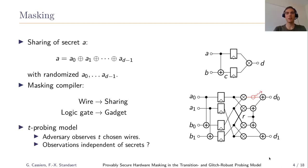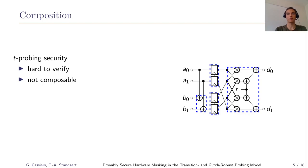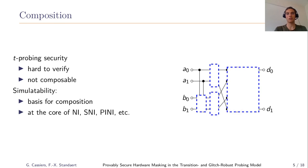The security of a masking scheme is evaluated in the T-probing model, whereby the adversary can obtain the value of T chosen wires in the circuit. We say a circuit is T-probing secure if no adversary can learn anything about the secret inputs. T-probing security is hard to verify: its computational cost grows exponentially with circuit size, and it is not composable — two T-probing secure gadgets connected together may not yield a T-probing secure circuit. So we use a stronger notion called simulatability, which enables composition by evaluating individual gadgets and then their connections to prove security of larger circuits.